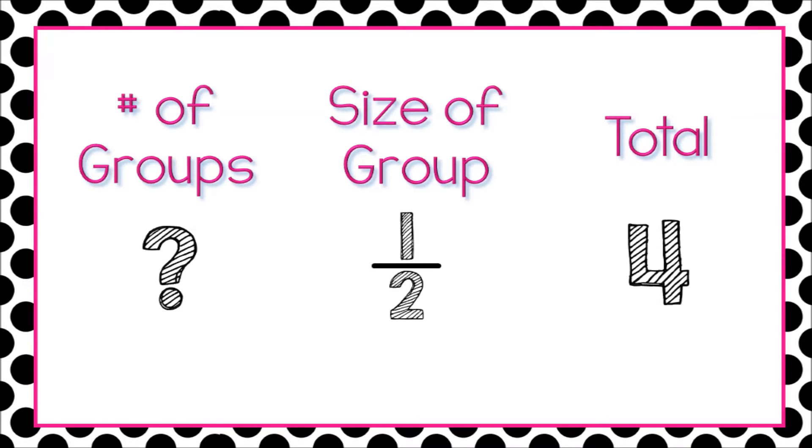During our bean party, we knew the total amount of beans was four cups. We knew that each serving size was one-half cup. We just didn't know how many groups or how many servings we could make. When we know the size of each group but we don't know how many groups, we can repeatedly subtract and find out how many groups or how many servings.